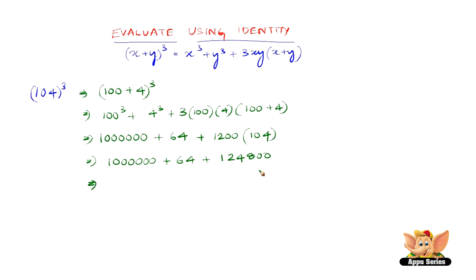So now adding all these up we get 1,124,864. Therefore, 1,124,864 is the expanded form of 104³.